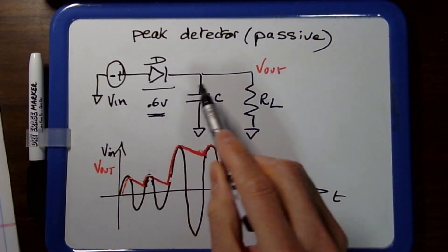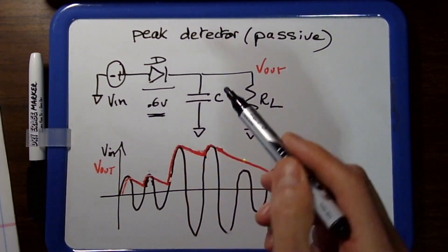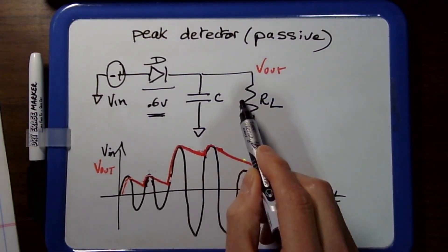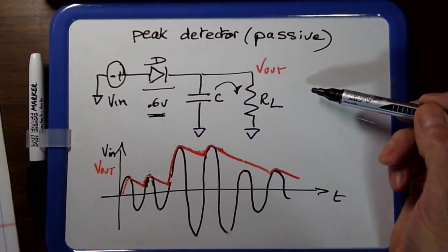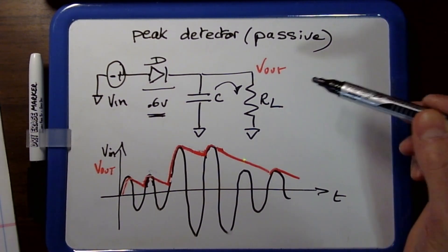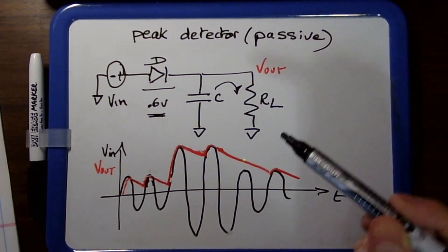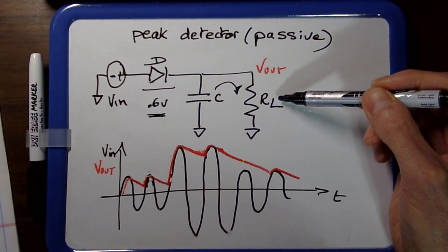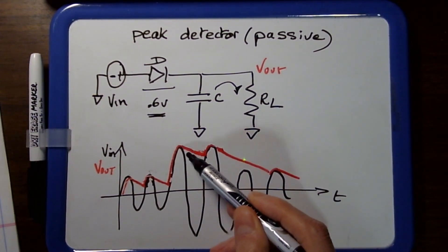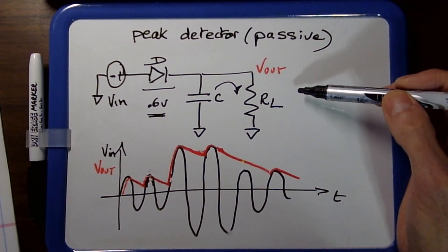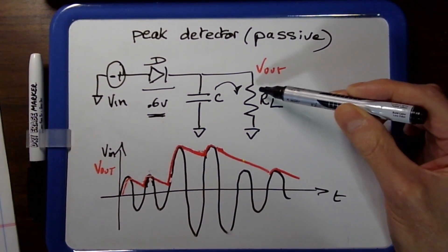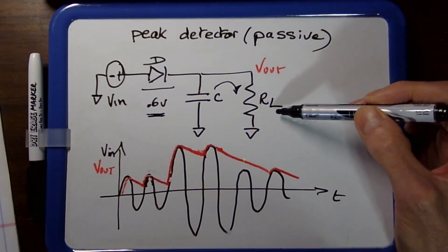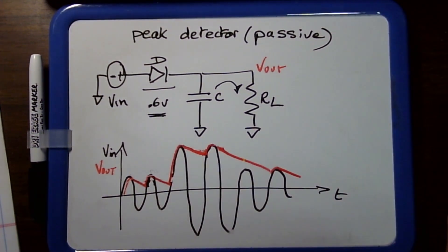There is another problem, not due to the diode but the capacitor: it has to discharge into the load. When it's drooping, it's discharging into the load resistance. If the load is very high, the capacitor holds its charge and stays horizontal. But as load resistance decreases, you get more droop. This means the behavior of this circuit is highly dependent on the impedance or resistance of the load, which is not ideal.